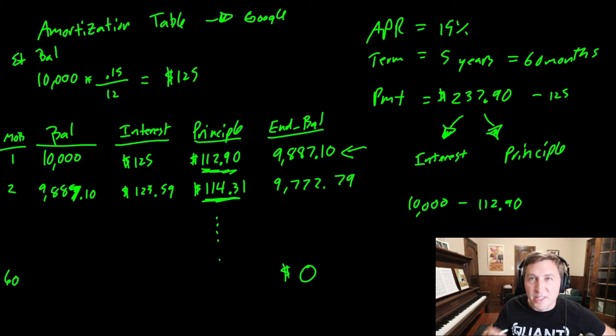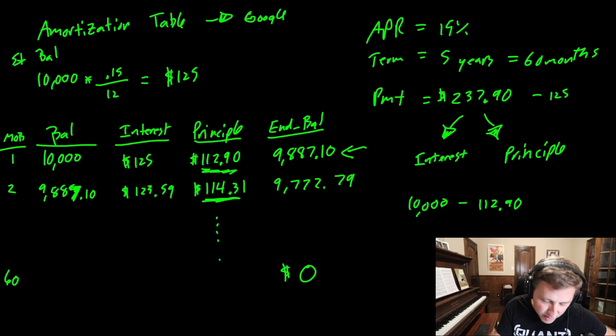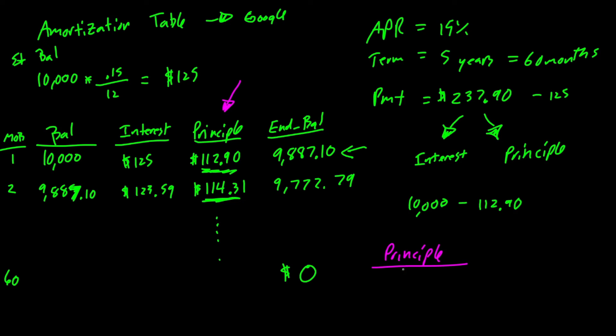And then again, to get the principal, we're going to take our payment amount here of 237.90. And we're going to minus out from that our 123.59. And this is going to give us 114.31. And now to get the ending balance, we're going to take the original balance of $9,887 and we're going to minus out our $114 here of that principal again, and we're going to have 9,772.79. Anyways, if you do this all the way to the bottom, when we get to term 60, there's going to be some sort of payment made and the ending balance is going to be $0 here.